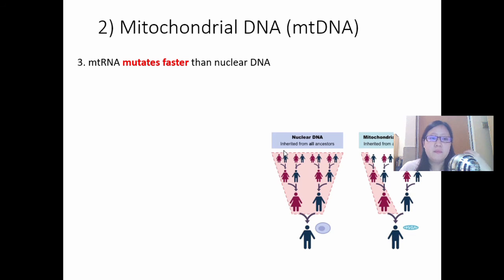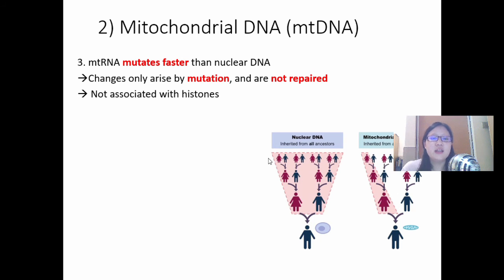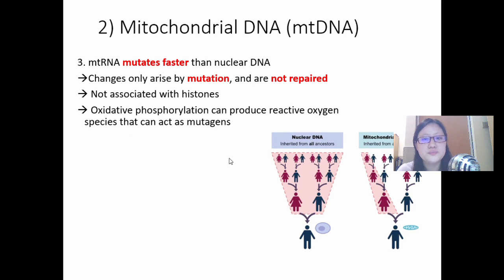Number three, mitochondrial DNA mutates faster than nuclear DNA. This arises only by mutation and is not repaired. In nuclear DNA, mutations may arise, but it may be repaired by the mechanisms, and in the nuclear DNA, it's associated with histones, so they are quite protected. However, in mitochondrial DNA, this is not so. To add on to that, oxidative phosphorylation in the mitochondria can produce reactive oxygen species, ROS, which can act as mutagens, so it mutates faster, so it tells time more accurately.